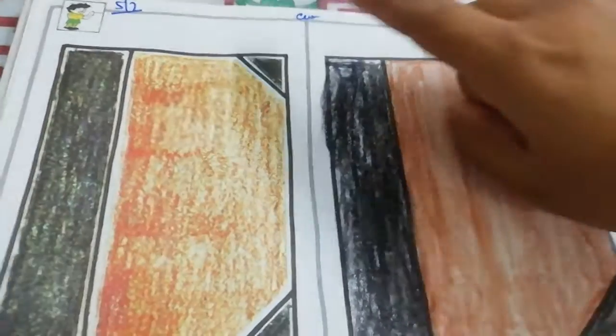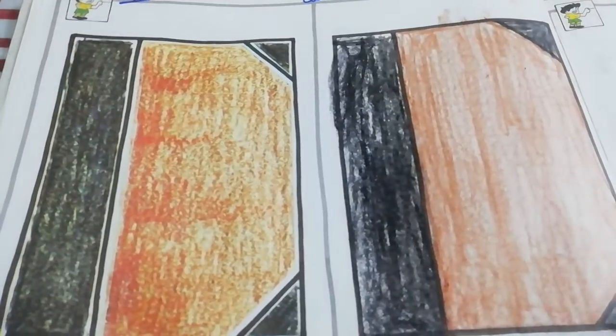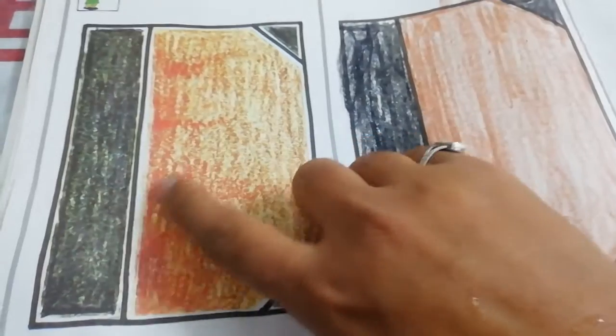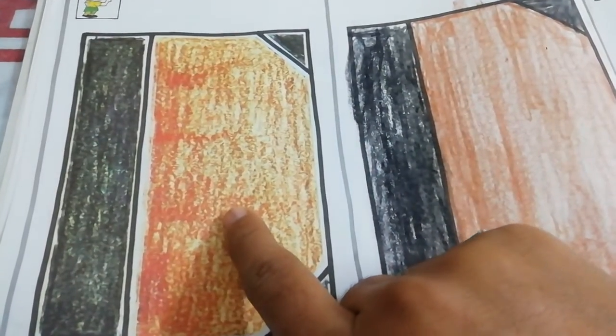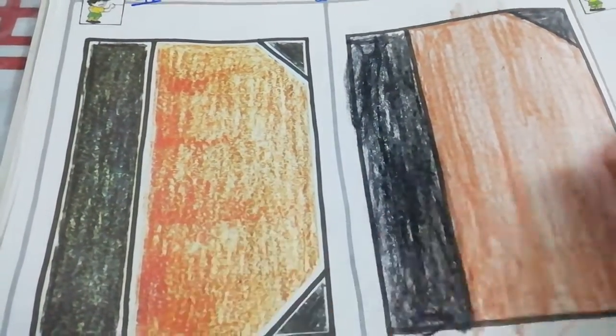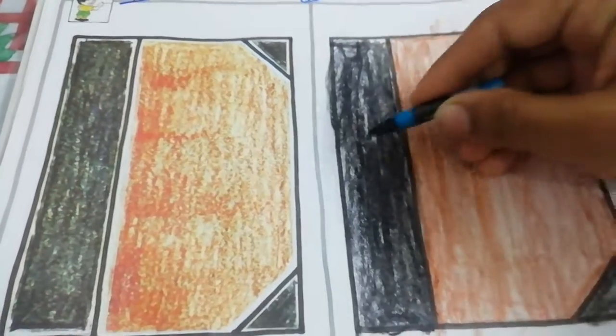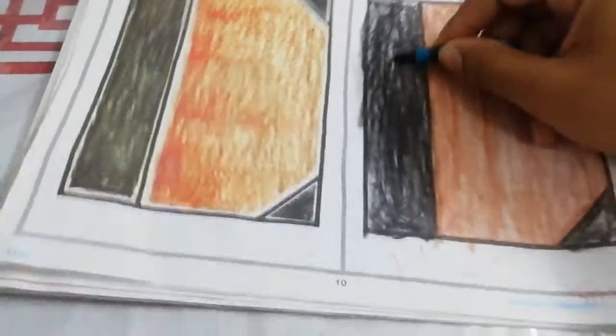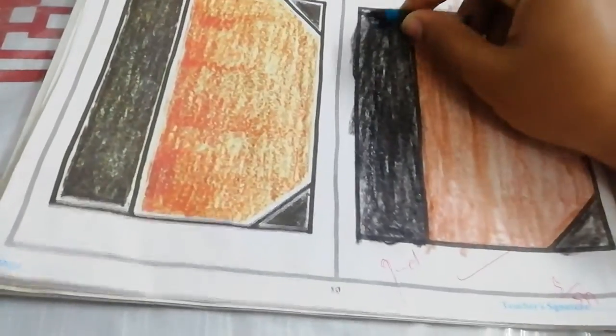Dear student, first of all you will write the date. After that you will do this color black and brown. Brown and orange mixer. First of all you will color in this vertical line.